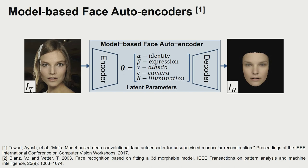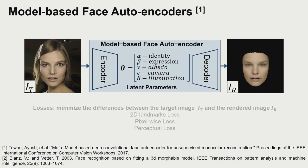Model-based face autoencoders address this problem by fitting the 3DMM to the target image. Typically, the encoder first estimates the parameters from the image, then the decoder synthesizes a 2D image using the estimated parameters. The face is reconstructed by retrieving the parameters which result in a synthesized image most similar to the target.